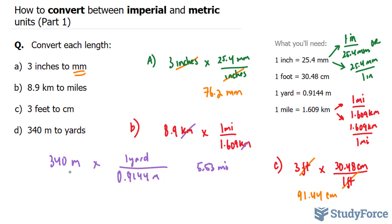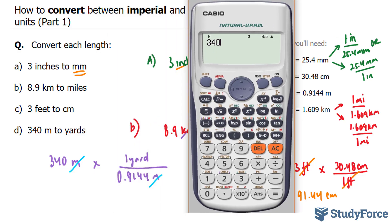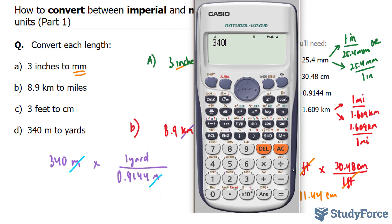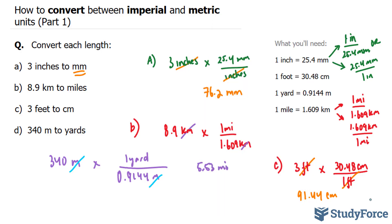By multiplying this out, the meters will cancel out. So we have 340 times 1 divided by 0.9144 and we end up with 371.8, 371.8 yards. And so there you have it.